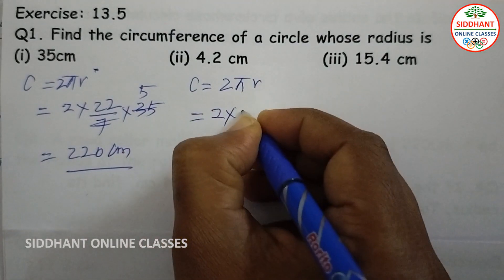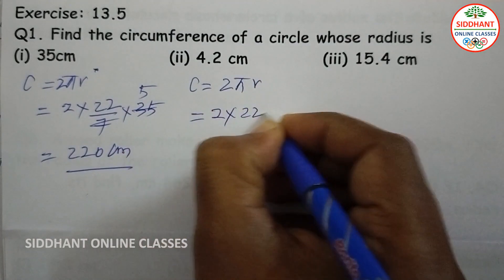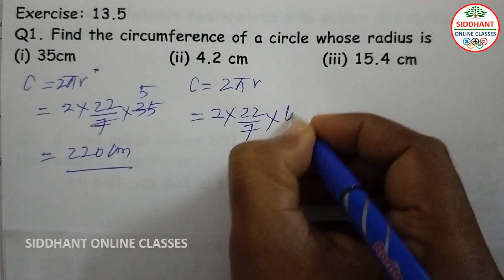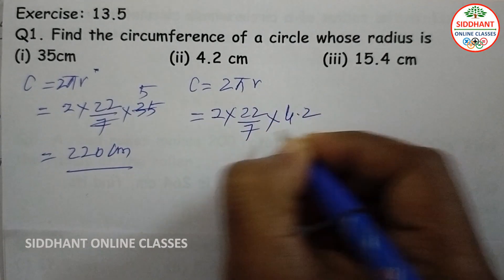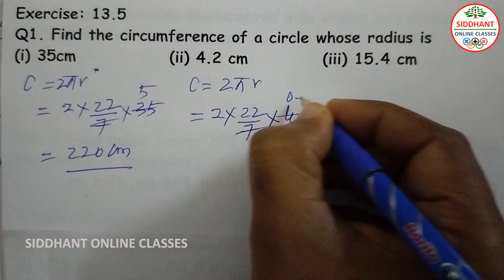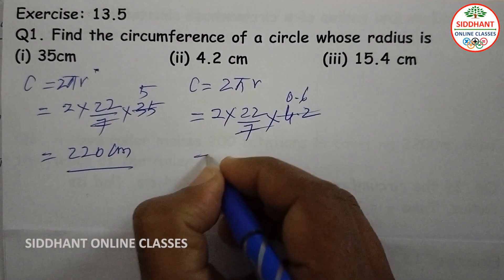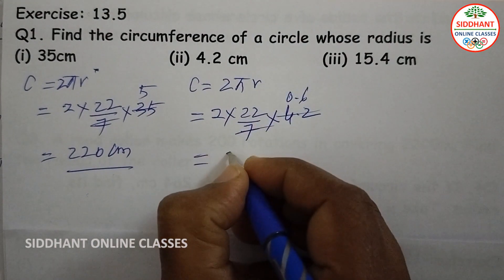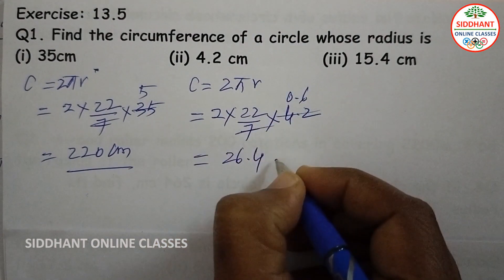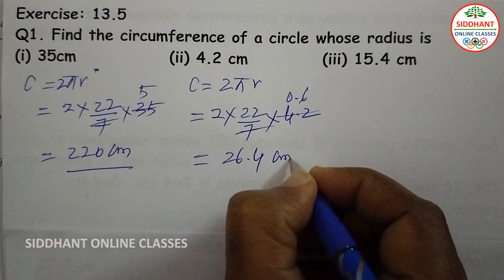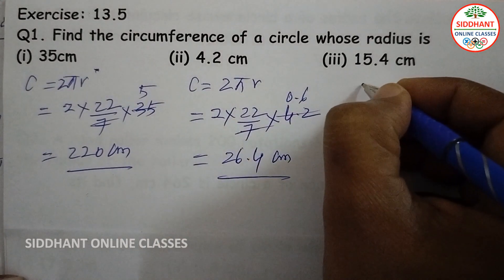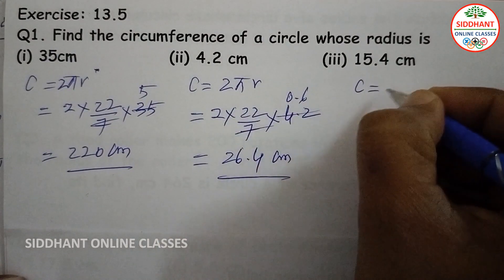Same here, circumference equals 2 pi r, that will be 2 into 22/7 into 4.2. Here 4.2 divided by 7 gives 0.6, so that will be 26.4 centimeters.